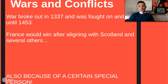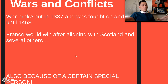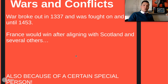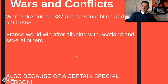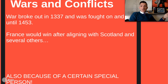War broke out in 1337 and was fought on and off again until 1453 — we're not fighting a war constantly for 100 years. Here's the other crazy part: what disease is running around this whole time? The Black Death is running its way through all of Europe, and it's believed that 40% of all the peasants in Europe died in the first year. France on the long run is going to end up winning after aligning with Scotland and several others.